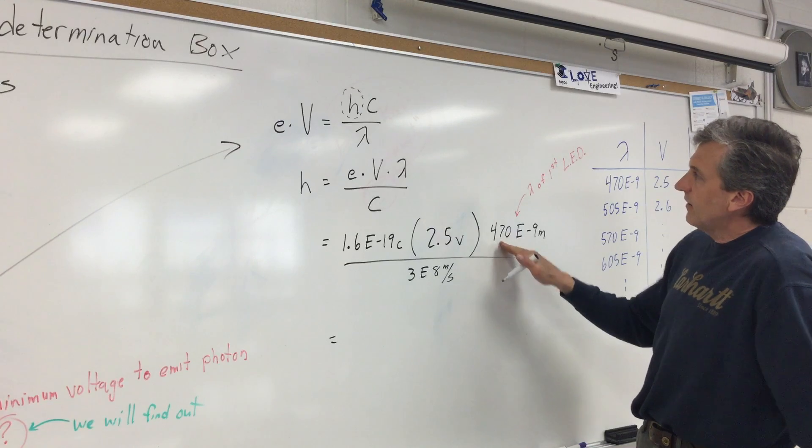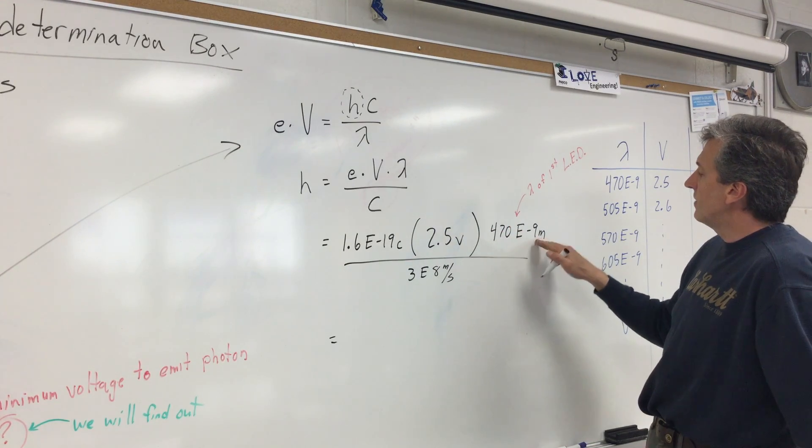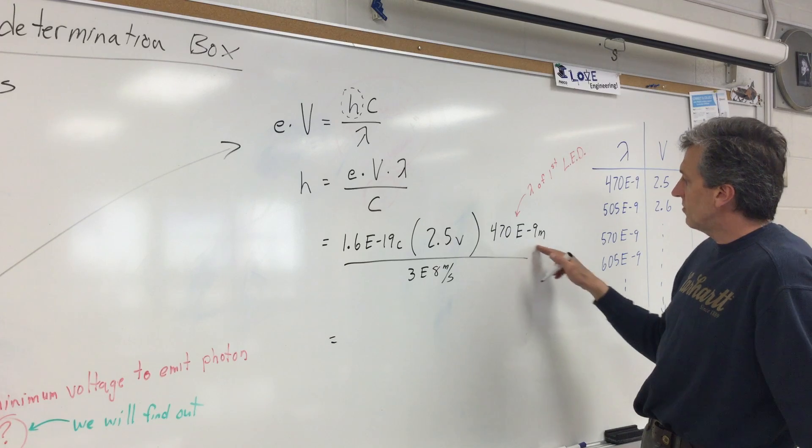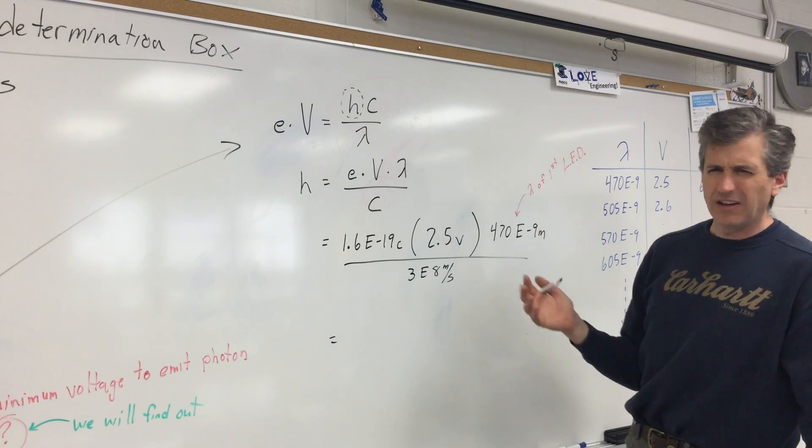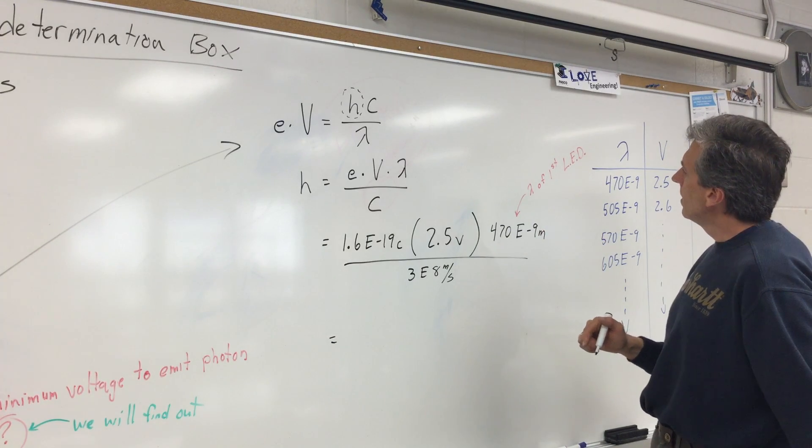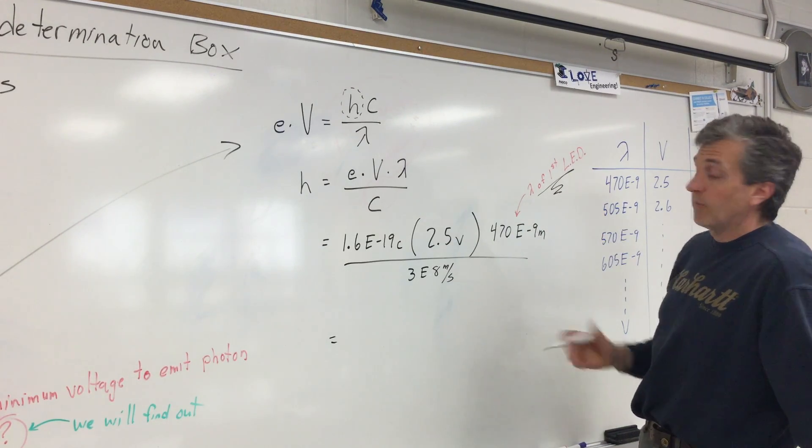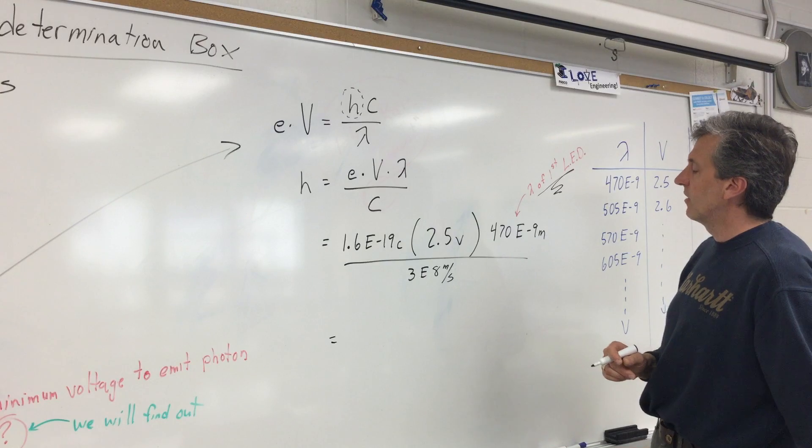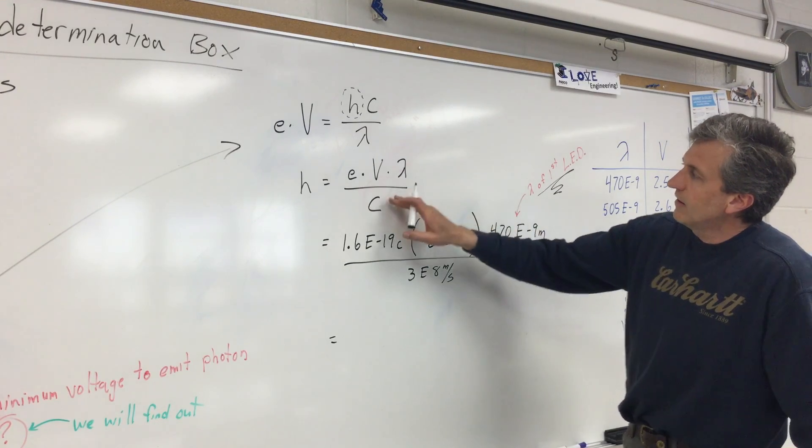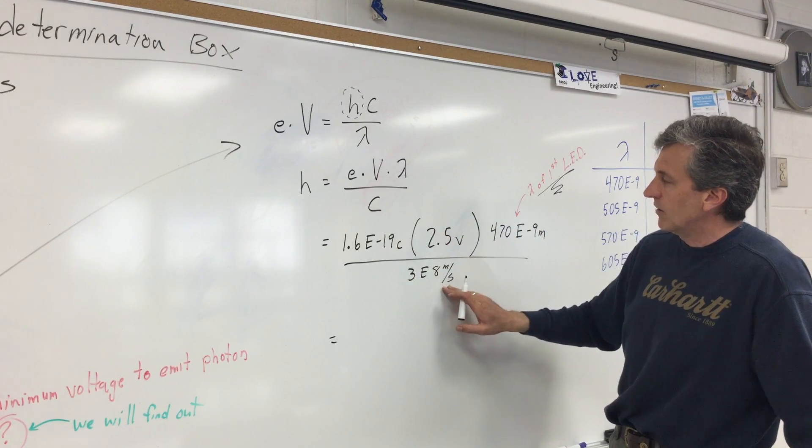The wavelength is 470 E negative 9 meters. That's just corresponds to the color. It looked kind of like a purplish blue to me. This is the first LED that we tested, but we can actually test a bunch of different LEDs. And the speed of light is 3E8 meters per second.